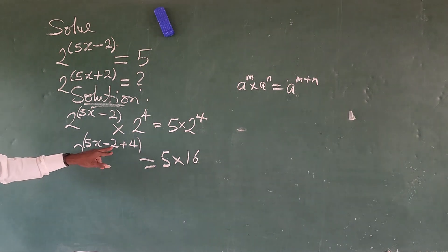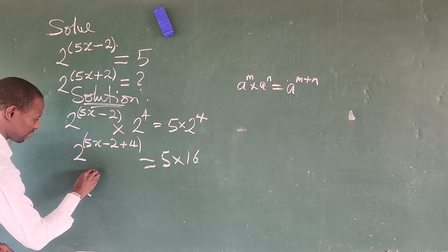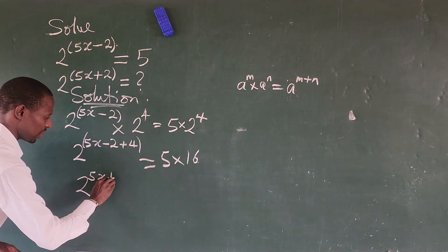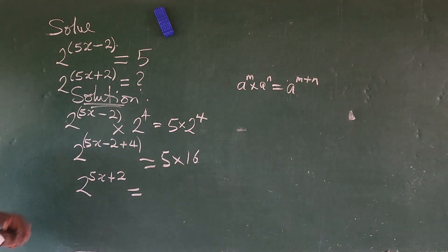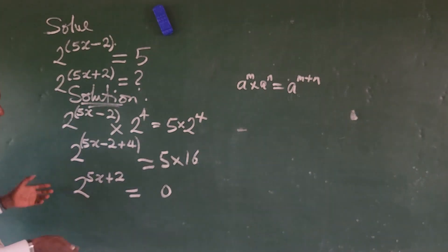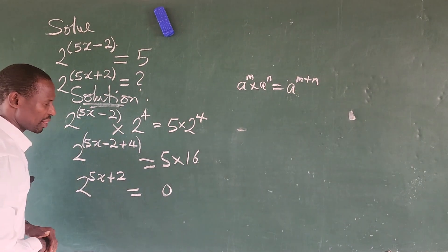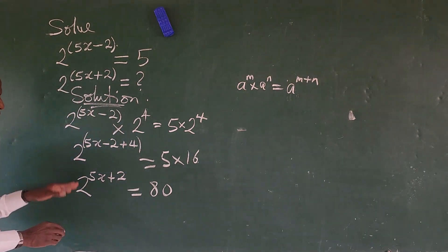Easy. So minus 2 plus 4 gives us what? Plus 2. So we now have here 2 to the power of 5x plus 2 is equal to 5 times 16, which gives us 30, carry 1. 5 times 1 gives us 5 plus the 3 you carry, which is 8. So we have here 80.